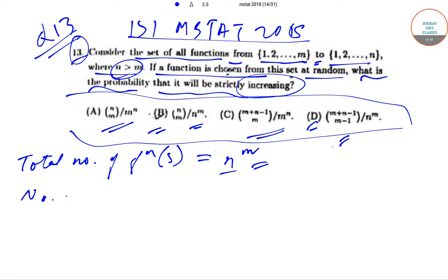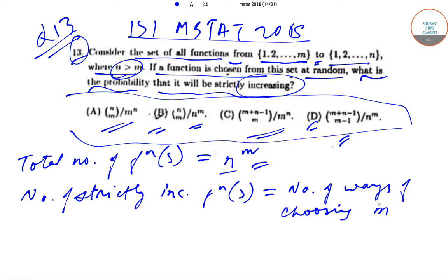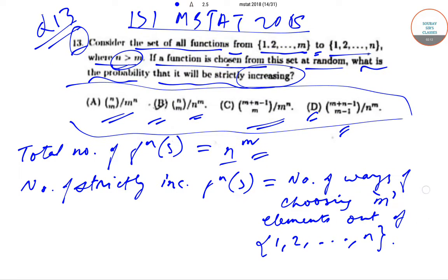The number of strictly increasing functions is the same as the number of ways of choosing m elements out of the set {1, 2, ..., n}. So this can be done in nCm ways.